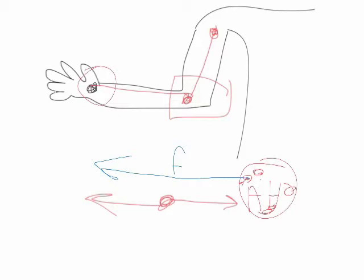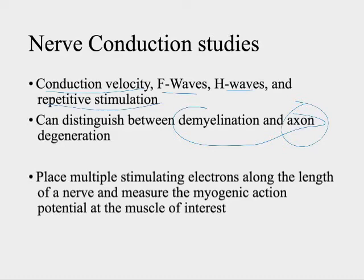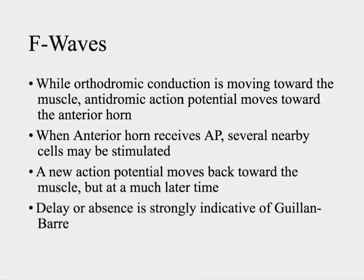The F-wave occurs when the antidromic action potential reaches the anterior horn, excites surrounding cells, and a new action potential is sent back down toward the muscle — producing a similar but much longer duration tracing. The F-wave is usually absent or very delayed in demyelinating disorders like Guillain-Barré. In nerve conduction studies we assess conduction velocity and F-waves to distinguish between demyelinating processes, where axons are still present but conduction is delayed or lost, and axon degeneration, where there is zero conduction.